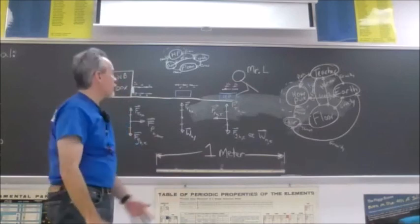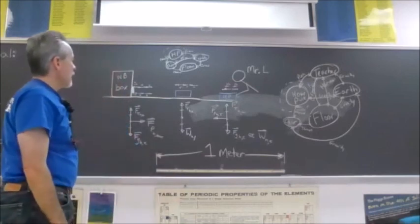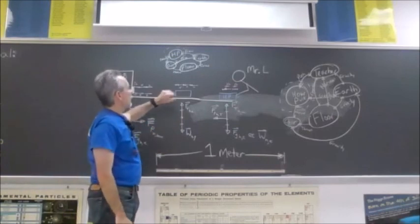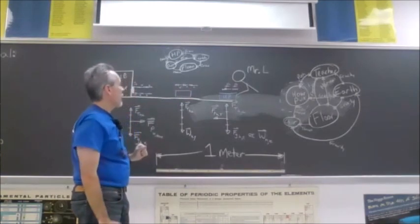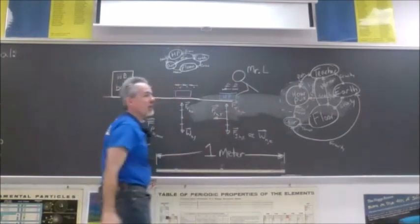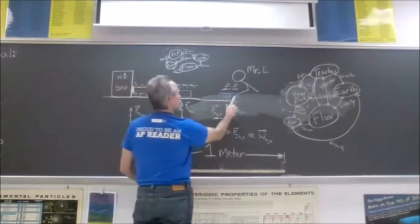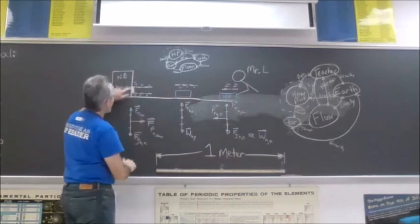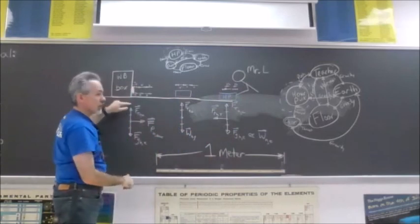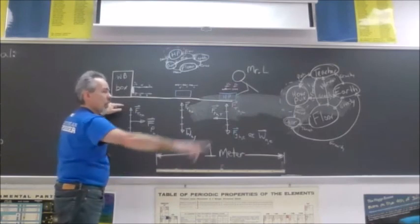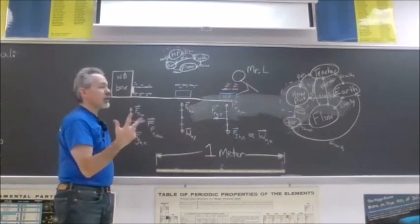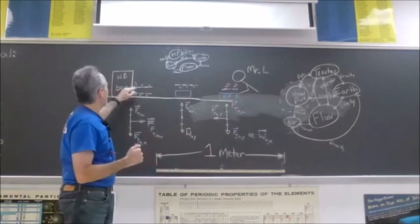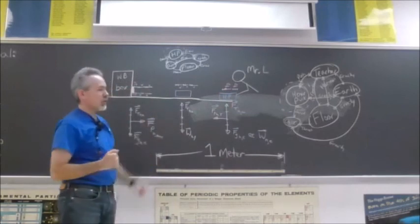To summarize: whenever you have balanced forces, either the object is not moving or it's moving with constant velocity. When forces are unbalanced, you have acceleration. Acceleration can mean speeding up, slowing down, or changing direction — like the hover puck bouncing off the box. Those are the three ways you can have an acceleration.